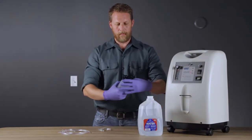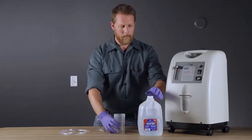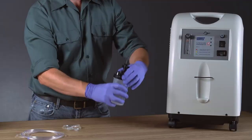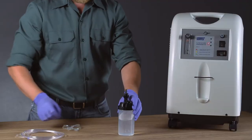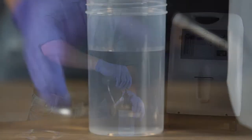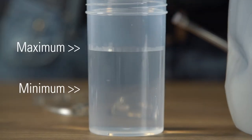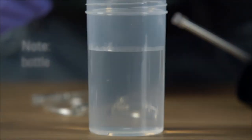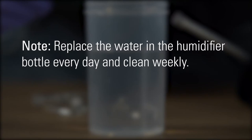After removing the cannula and humidifier bottle from their packaging, unscrew the cover of the humidifier bottle. Add purified or distilled water to the bottle. Ensure the water falls between the minimum and maximum indicators on the side of the bottle. Note, replace the water in the humidifier bottle every day and clean the humidifier bottle weekly.